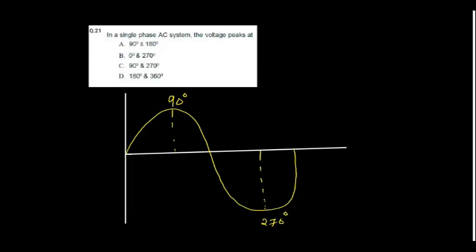In a single phase AC system, the voltage peaks at 90 degrees and 270 degrees.